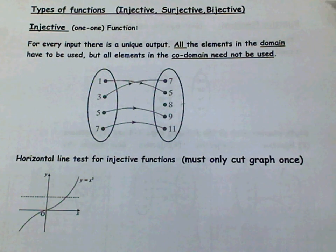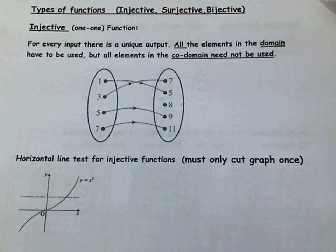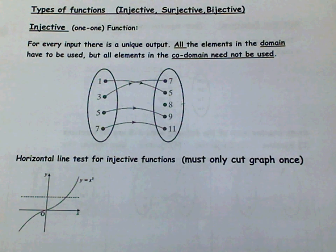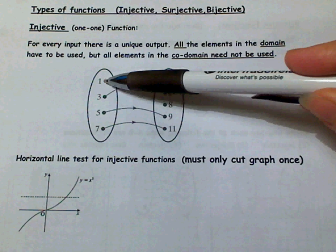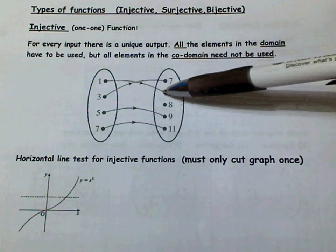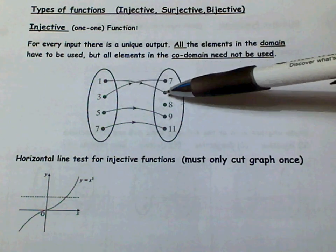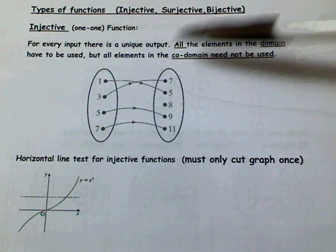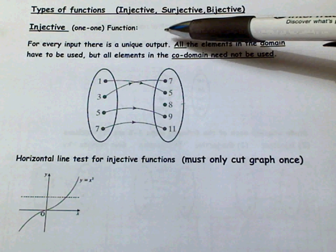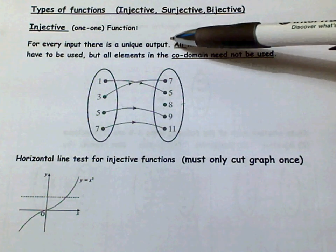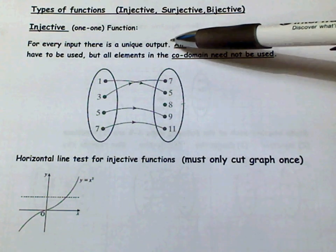The first one is an injective function, also known as a one-to-one function. It is called this because for every one input there is only one output, and for every input there is a unique output — that is very important.